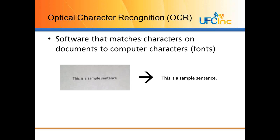OCR is software that matches characters on documents to computer characters or fonts. So let's look at this example. We have a piece of paper that has the words 'this is a sample sentence' typed on it. OCR takes those typed characters off the document and turns it into text that can be used any way we want it. Some examples we would use OCR for are to grab an invoice number off an invoice, or to grab a tracking number off of a shipping receipt.